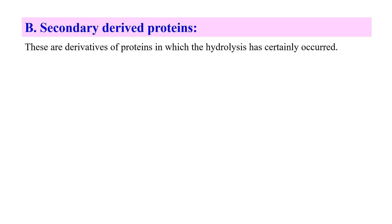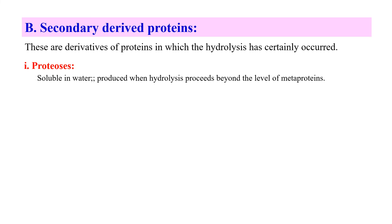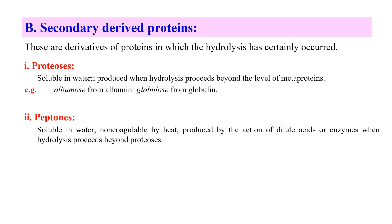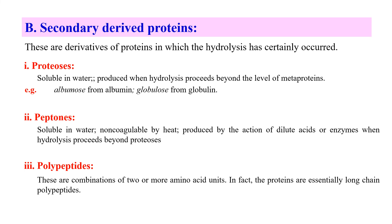Next, secondary derived proteins — these are derivatives of proteins in which hydrolysis has occurred. First are proteoses, which are soluble in water and produced when hydrolysis proceeds beyond the level of metaproteins. Examples include albumose from albumin and globulose from globulin. Then peptons — these are soluble in water, non-coagulable by heat, and produced by the action of dilute acid or enzyme when hydrolysis proceeds beyond proteoses. Finally, polypeptides are the combination of two or more amino acid units; proteins are essentially long chains of polypeptides.